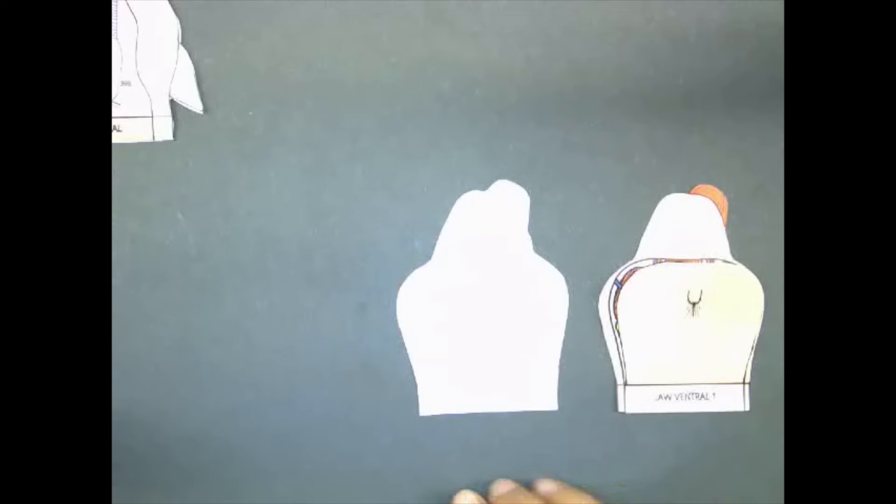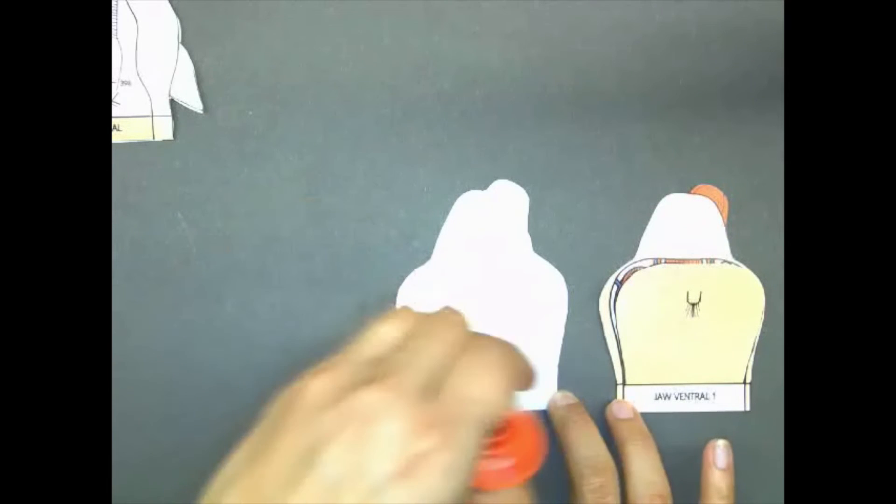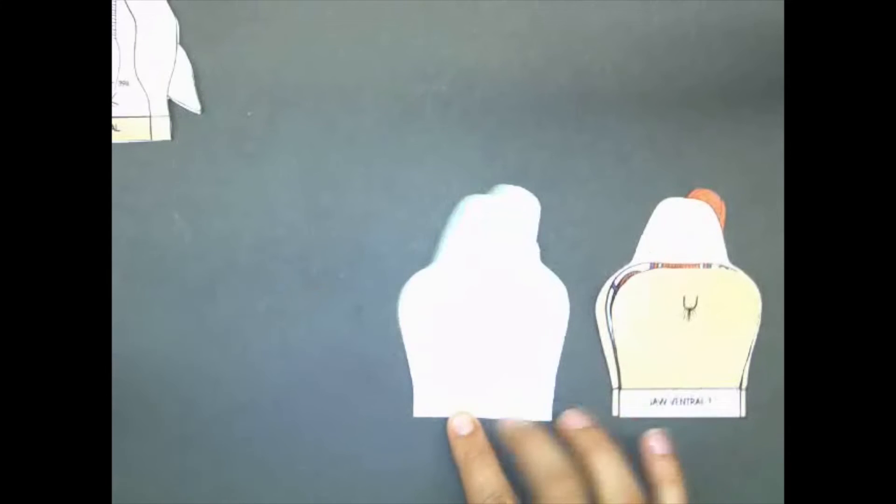The final step is to turn over jaw internal. You'll see a blank white side. Apply some glue and then you're going to overlap jaw ventral to it because it lines up perfectly.